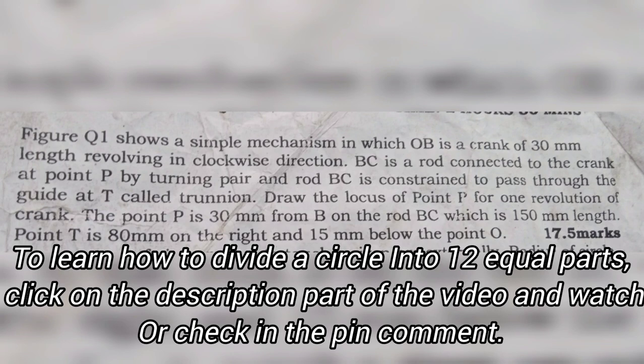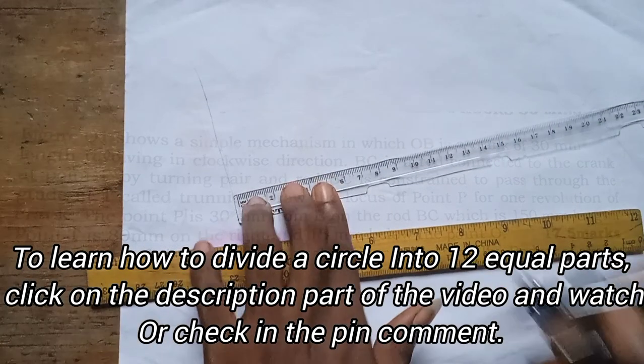The figure above shows a simple mechanism in which OB is a crank of 30mm length revolving in clockwise direction. BC is a rod connected to the crank at point P by turning pin and rod BC is constrained to pass through the guide at T called trunion. Draw the locus of point P for one revolution of crank. The point P is 30mm from B on the rod BC which is 150mm length. Point C is 80mm on the right and 15mm below the point O. Let us draw.